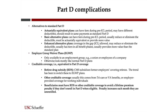There are alternatives: the actuarially equivalent plans, which can have tiers in the pre-ICL period. Tier one is usually generic, and many plans charge zero dollars copay for generics. Then there's the basic alternative plans, which usually eliminate or reduce the deductible but have to be actuarially equivalent or provide more value than a standard plan.